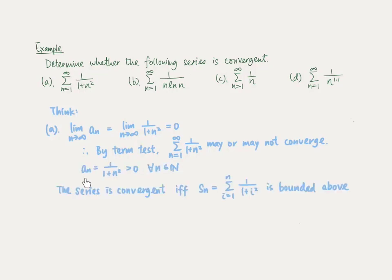Since the term a_n, which equals 1 over 1 plus n squared, is greater than 0 for all natural numbers n, by the second test this series is convergent if and only if the nth partial sum S_n is bounded above. However, it is rather difficult to find a closed-form formula for S_n for this series. So the difficulty is that usually we cannot find a closed-form formula for S_n, making it hard to directly apply the second test. The following two tests will be more helpful.